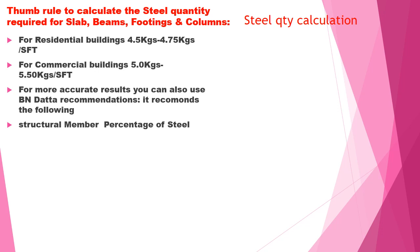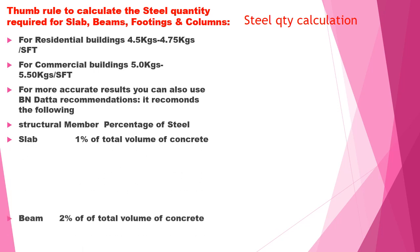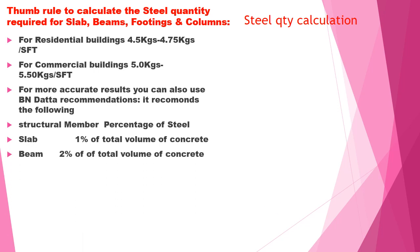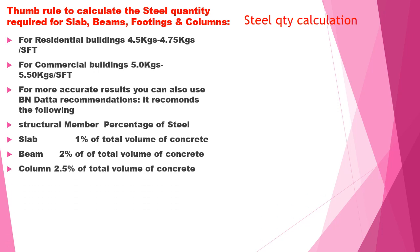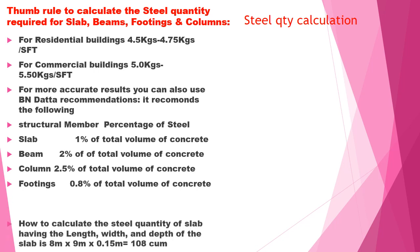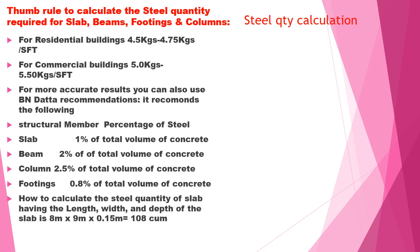The BN data recommendations are as follows — percentage of steel consumption by structural member: slab: 1% of the total volume of concrete; beam: 2% of total volume of concrete; column: 2.5% of the volume of concrete; footing: 0.8% of the total volume of concrete.